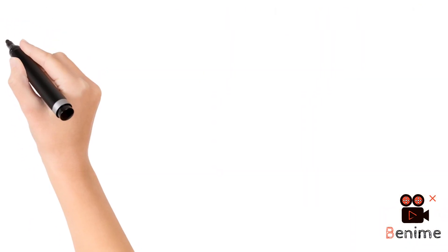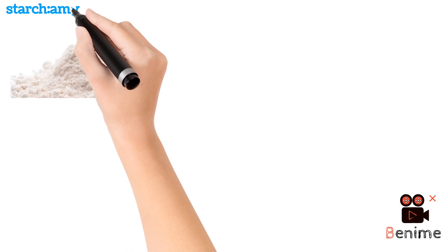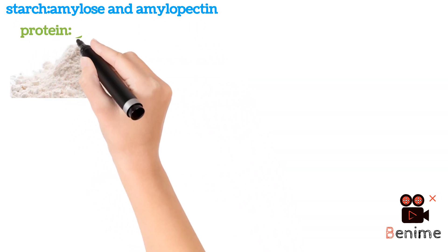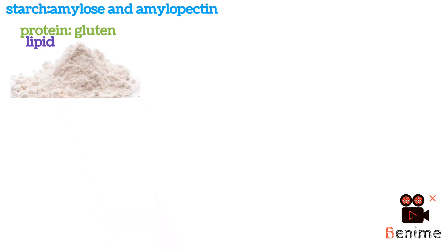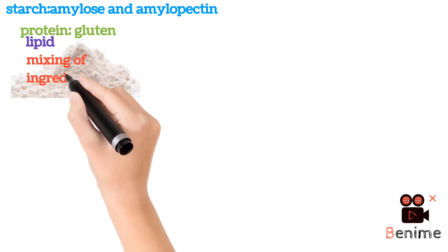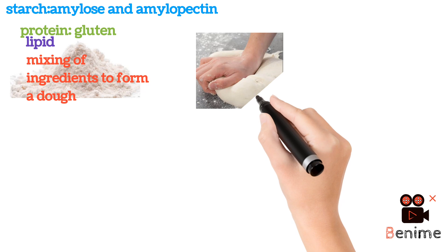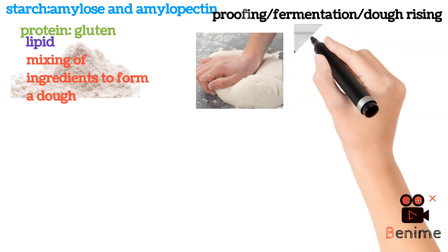Let's look into the components of flour, because flour is the most important ingredient. It contains amylose and amylopectin as starch, gluten as a protein, and lipid. Bread making involves mixing of ingredients and kneading to form a dough. The dough will then rise and ferment, and lastly, baking.